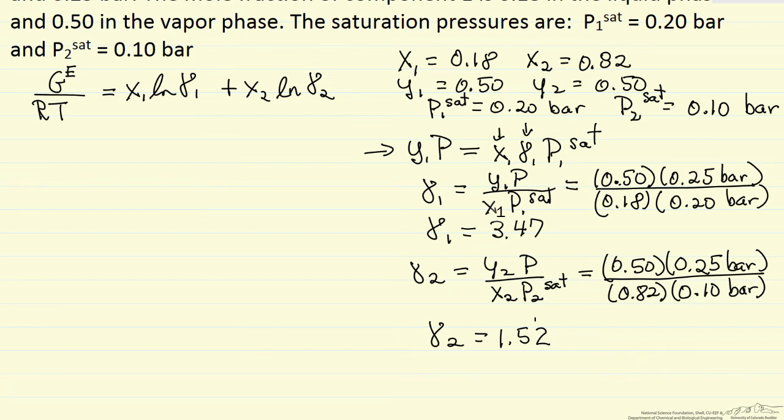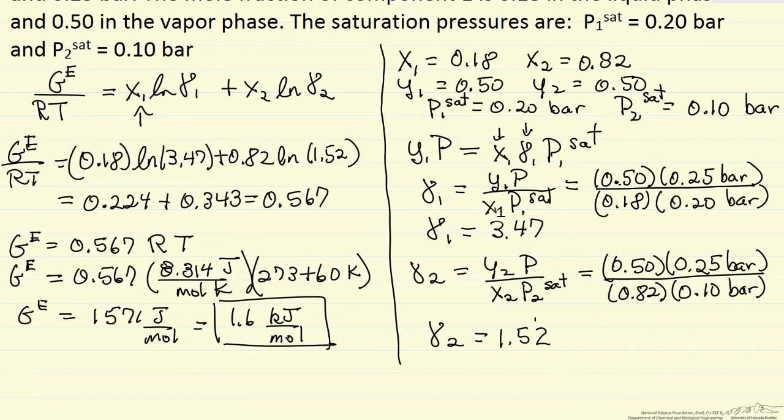So now what I'm going to do is substitute the values in. We have x one, gamma one, x two, and gamma two. I'll substitute those values in and we'll get the excess Gibbs free energy. So I've made the substitution.